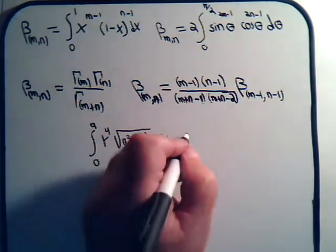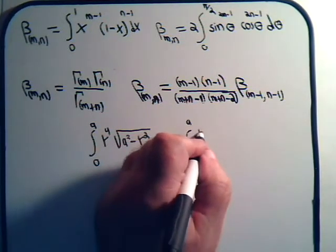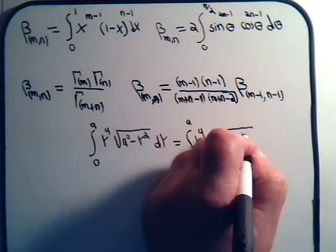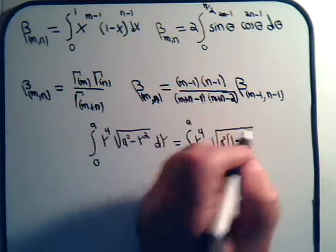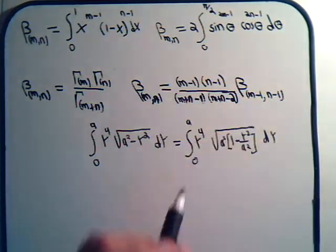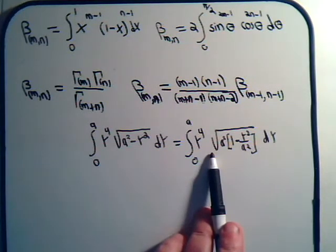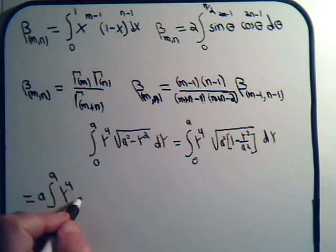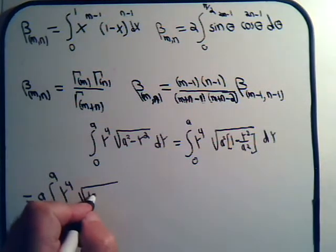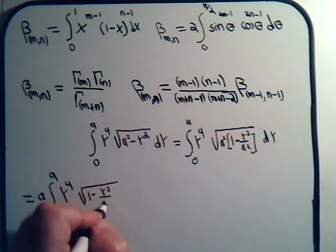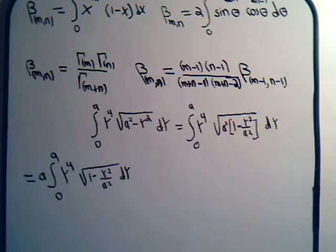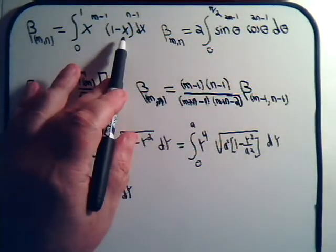On the square root sign we'll have a squared times 1 minus y squared over a squared. We can take this a to the outside of the square root sign, and since a is a constant we can take it outside of the integral. So this equals a times the integral of y to the 4th times the square root of 1 minus y squared over a squared, dy.